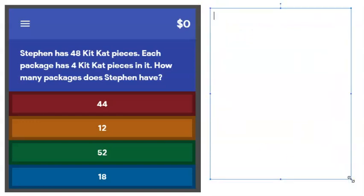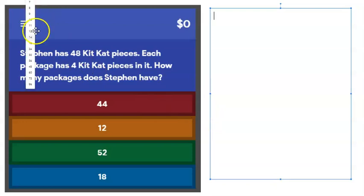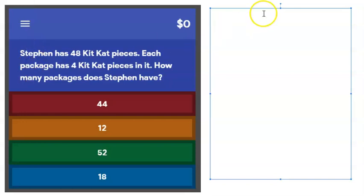So I'm looking at this question. It says Stephen has 48 Kit Kat pieces. Each package has four Kit Kat pieces in it. How many packages does Stephen have? I'm going to type because it's better than my handwriting on the computer. So I know I have to do my SIDES check.